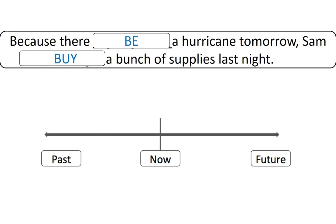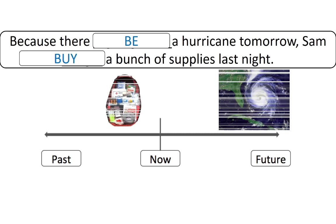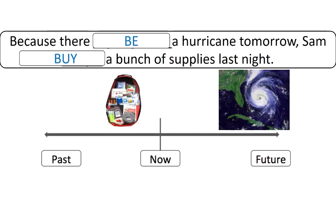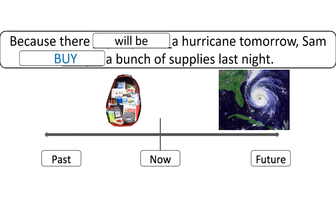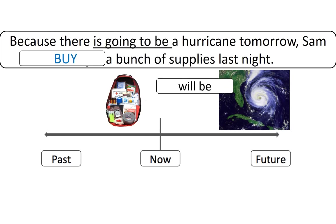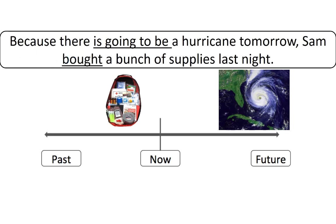Think about the timeline for this one. The answer is: 'because there is going to be a hurricane tomorrow.' Or we can also say 'because there will be a hurricane tomorrow.' Since this is a prediction, both ways are okay. 'Sam bought a bunch of supplies last night.'